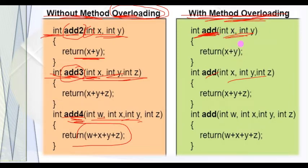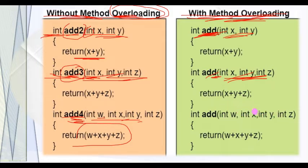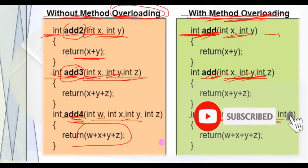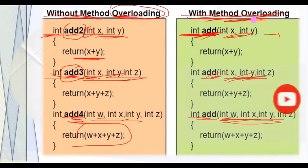We have one parameter type. If you have the same function name and the same number of parameters, those functions are considered the same. The parameter type must differ. This function is different from this function even if the name is the same and the number of parameters is the same — it uses four parameters. The function must also differ in parameter type.